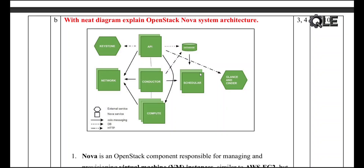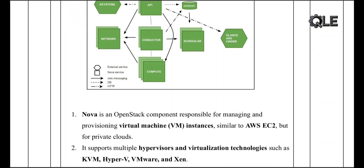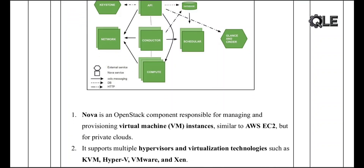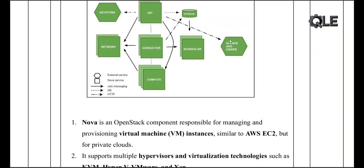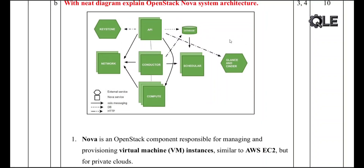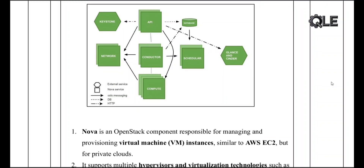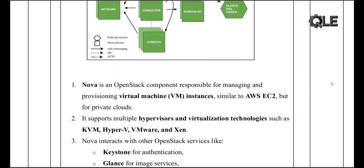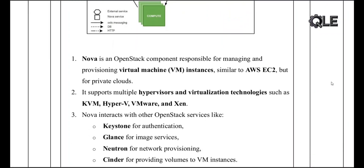Nova's integration with other OpenStack services: it works with Keystone for user authentication, uses Glance to retrieve disk images for VM instances, communicates with Neutron to set up networking, and connects to Cinder to attach block storage volumes.